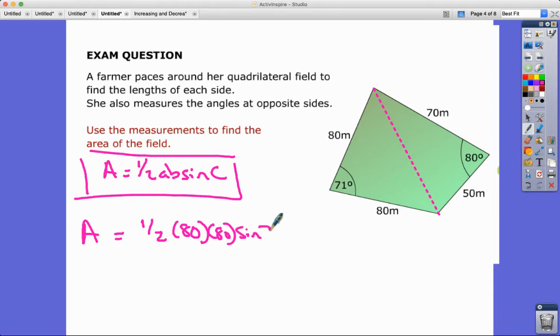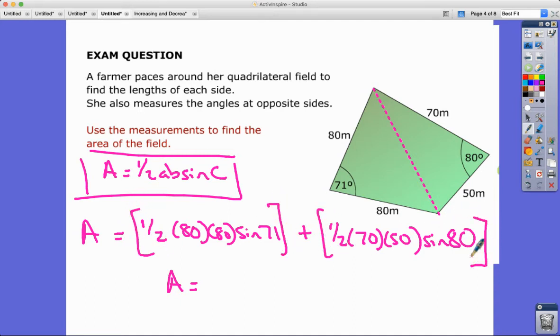Be super careful putting those things into our calculator one at a time. So we've got 0.5 times 80 times 80 times sine 71, the first one, plus another 0.5 times 70 times 50 sine 80.